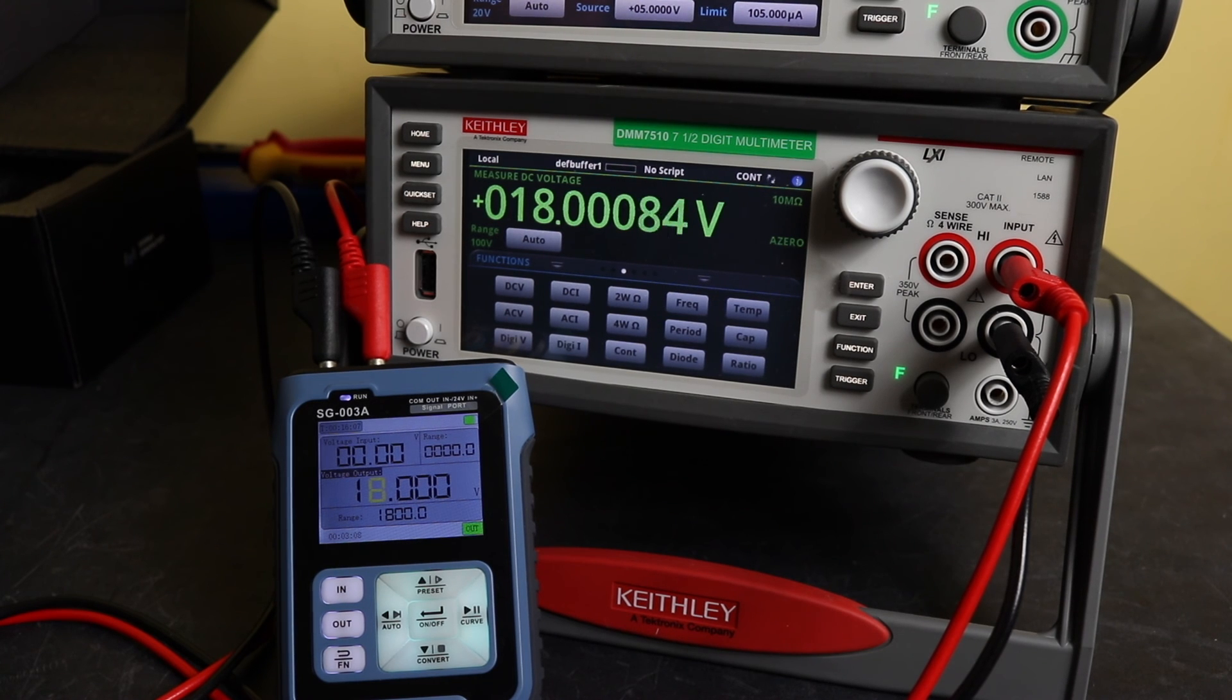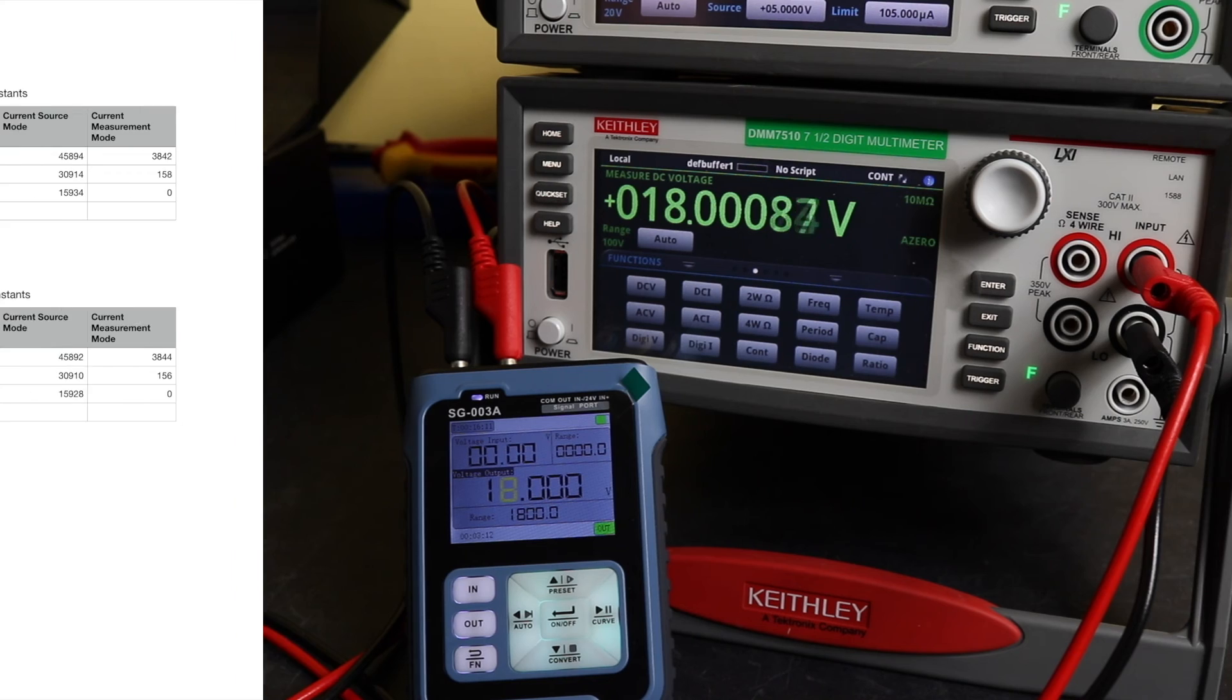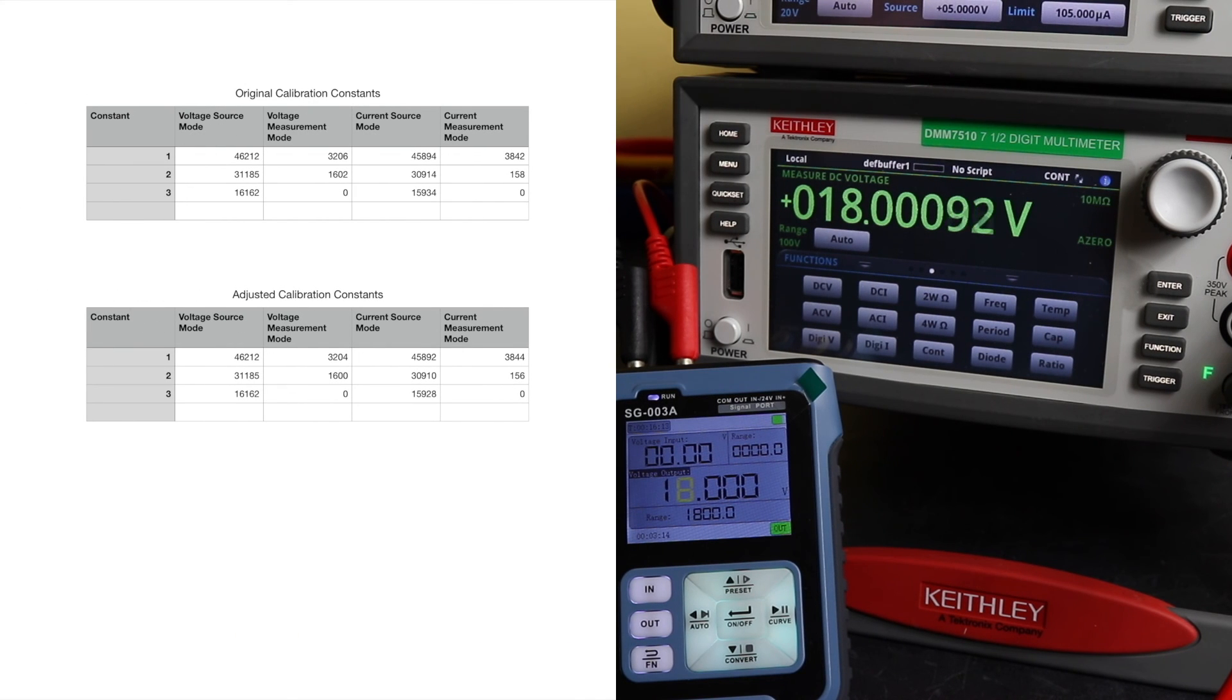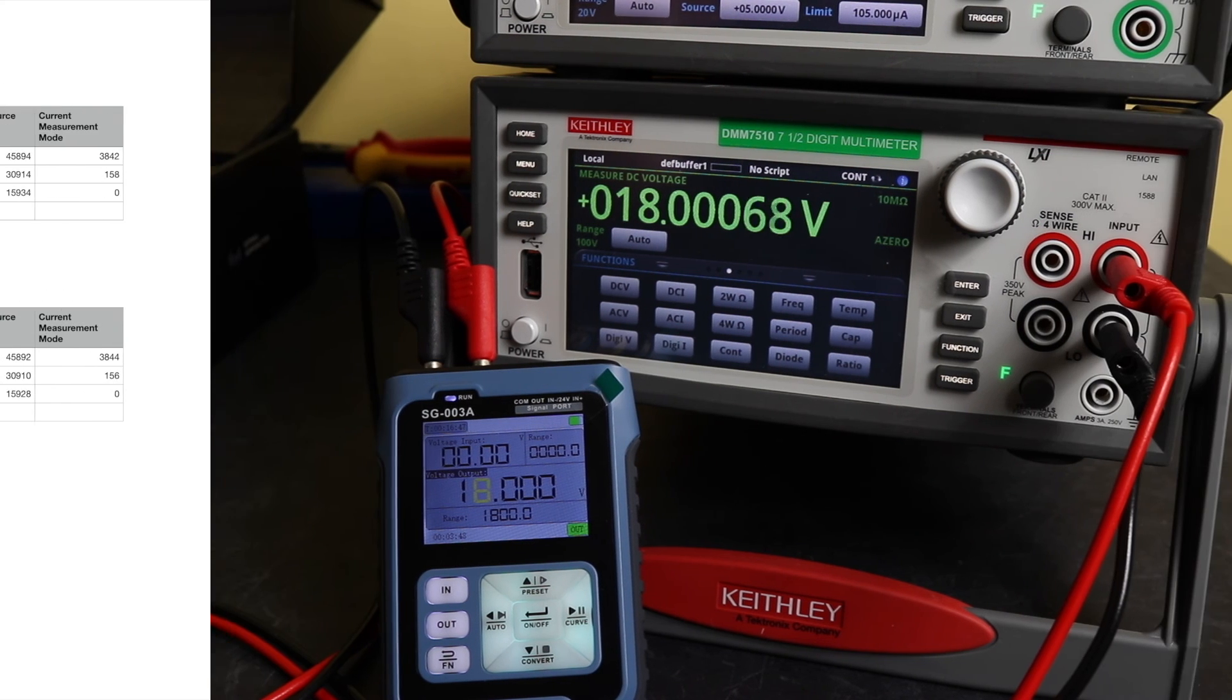Put this final table up, you see here we've got our original calibration constants that I had and then the adjusted ones, the ones that I adjusted them to to get those readings that you've seen on the other tables. So it was the voltage source, yeah, the voltage source I never touched. I've left them as they were. It's just voltage measurement, current measurement, and current source I tweaked, not far away from them, but just enough to make a bit of a difference.